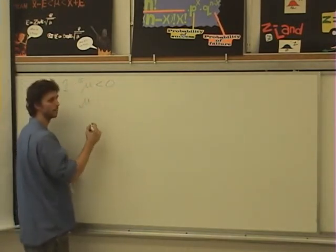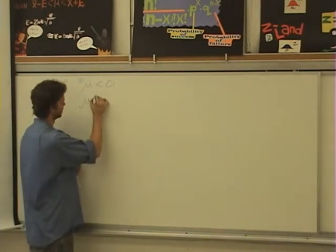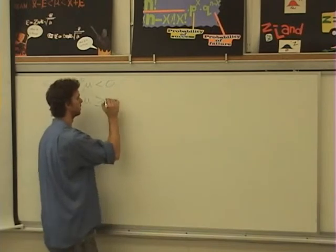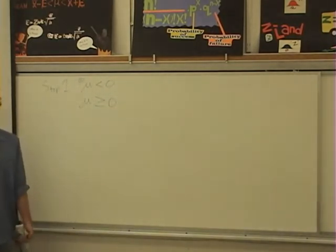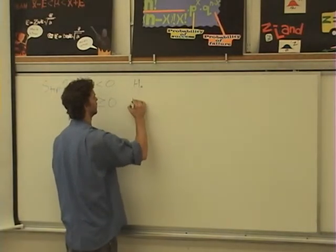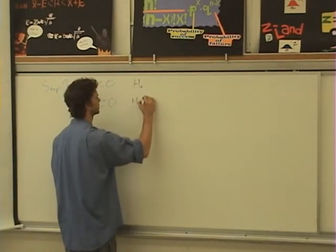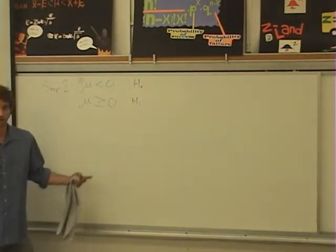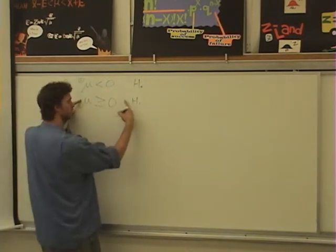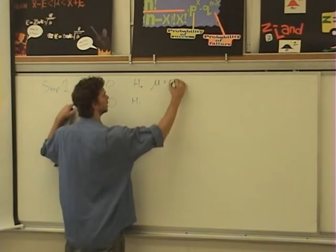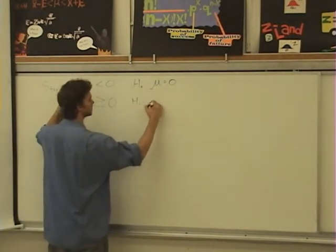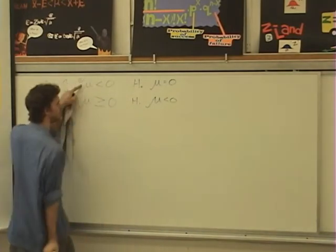What's the direct opposite of that? Mu is greater than or equal to zero. Awesome. Mu is greater than or equal to zero. There we have it. So now we've got to do the null and alternative hypothesis. Which one of those has the equal sign? Looks like the second one. So this one becomes the null hypothesis, meaning this one becomes the alternative hypothesis.